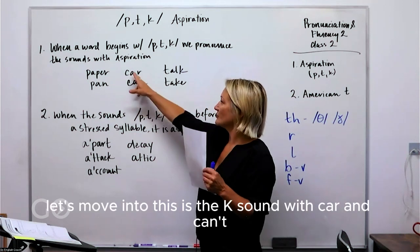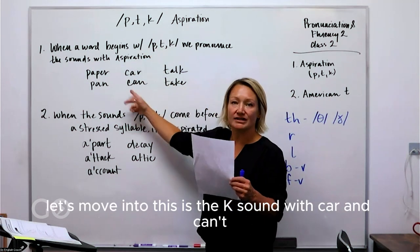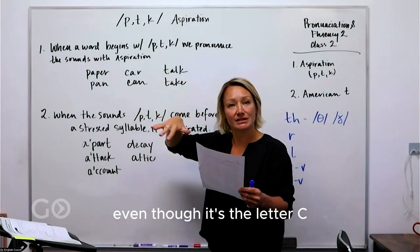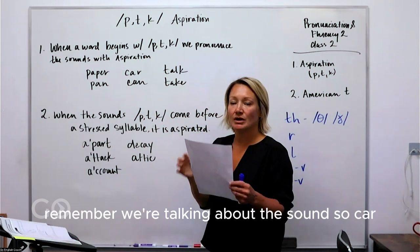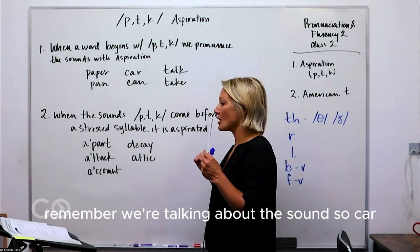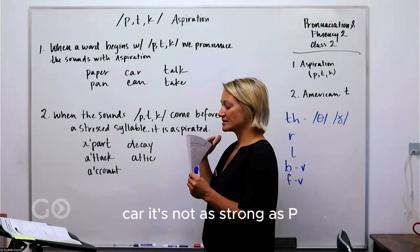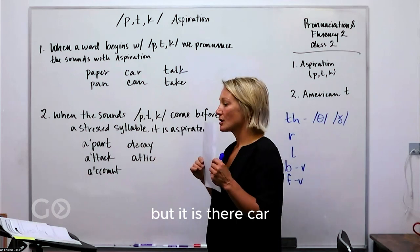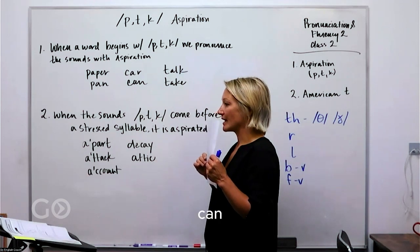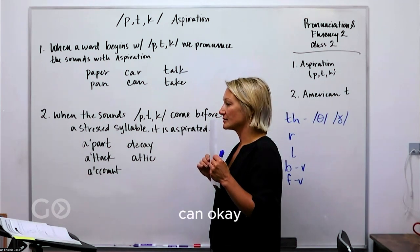Let's move on. 'Pan' — and this is the K sound with 'car' and 'can.' Even though it's the letter C, remember we're talking about the sound. Car, car — it's not as strong as P but it is there. Can, can.